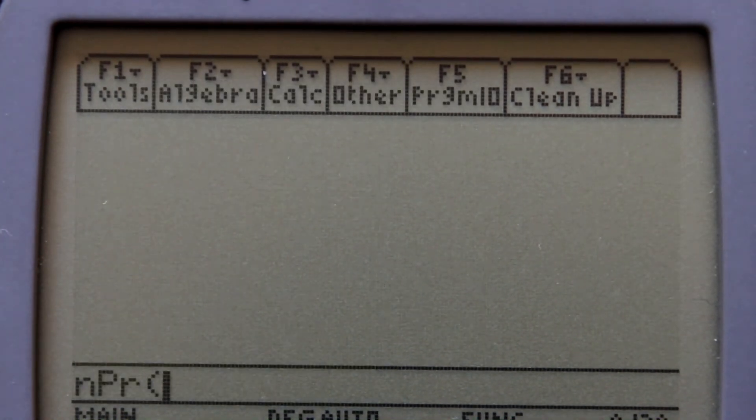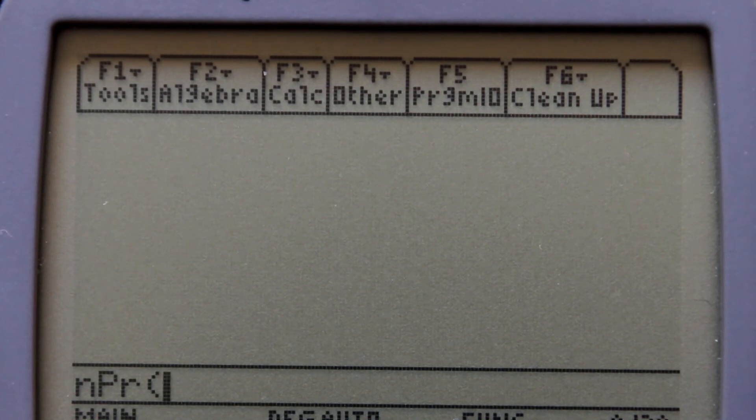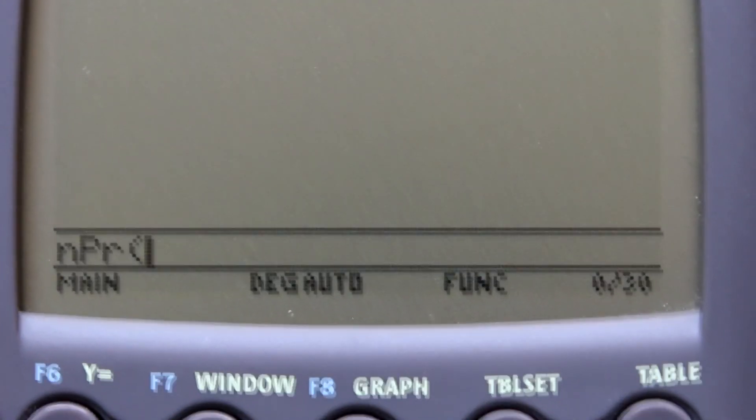Now on the calculator you see the permutation notation, nPr, with the open parenthesis.